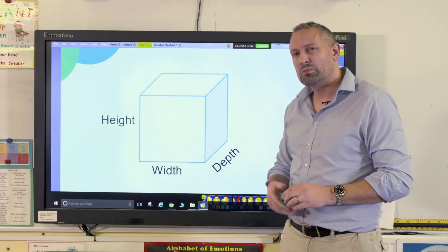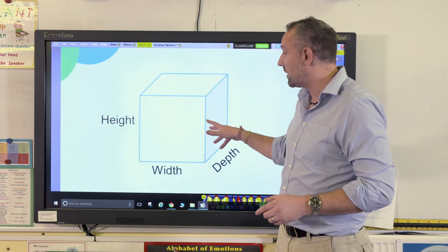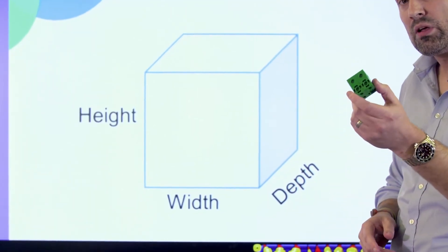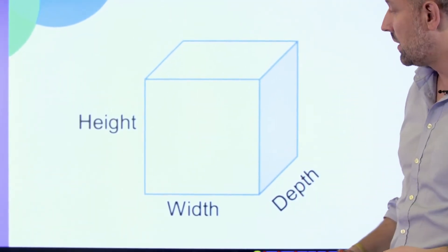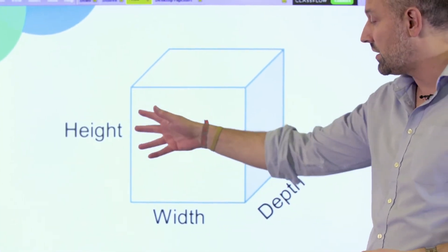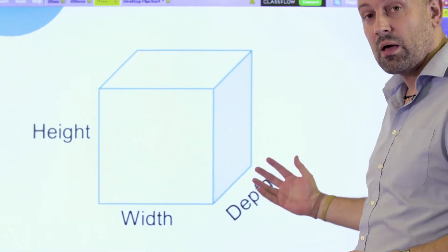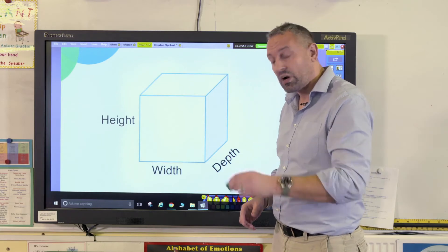Now here we've got a cube which might be a little bit abstract when we look at it pictorially, but if they've played with it in concrete first, that will really help them. Again, we're now dealing with 3 dimensions: height times width times depth, and we would write it like this.